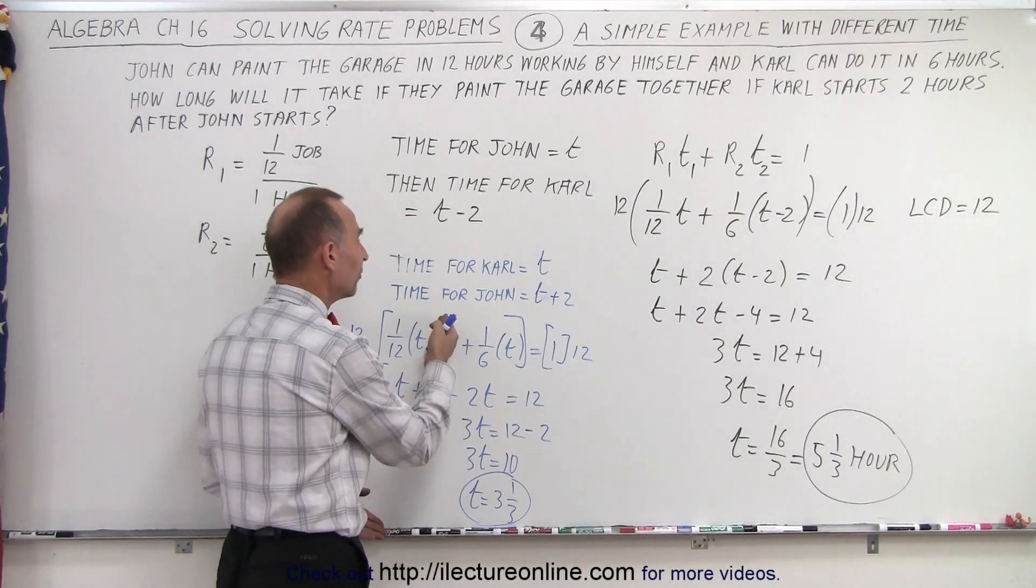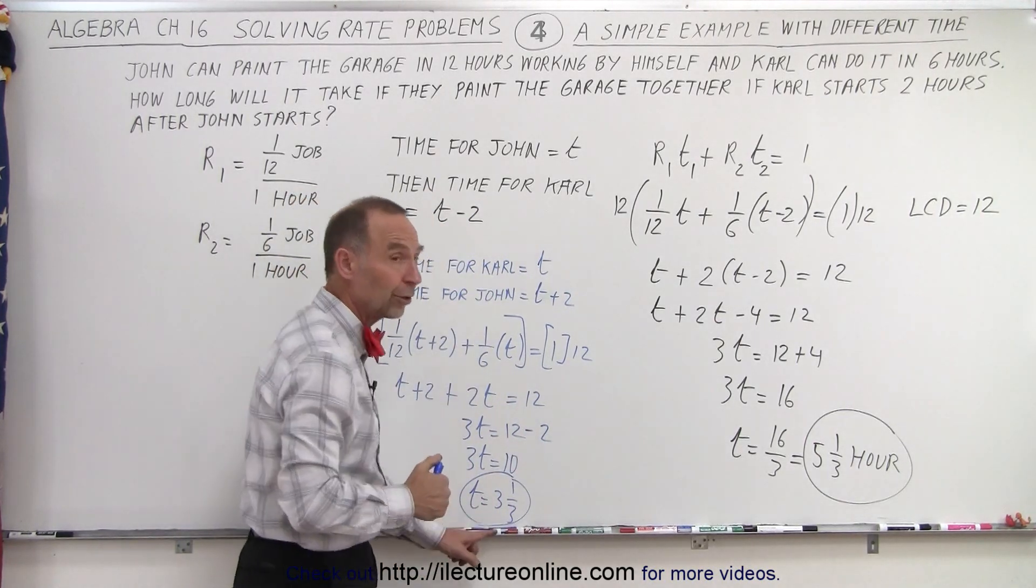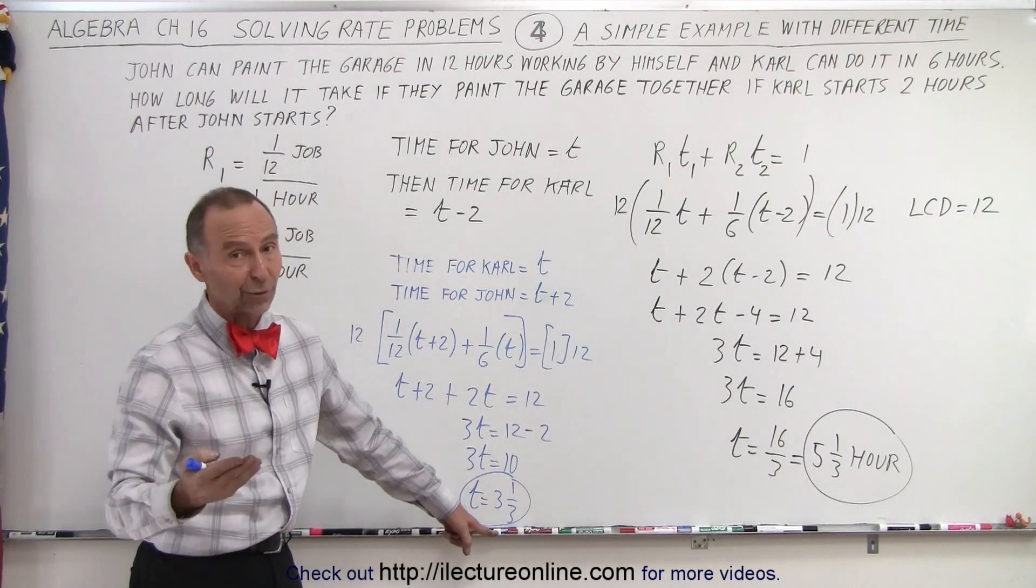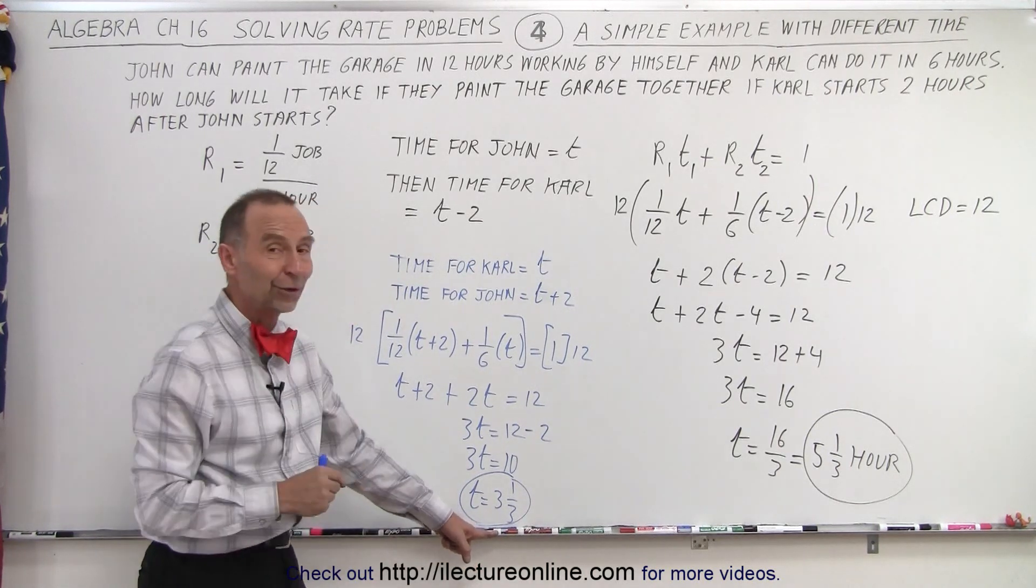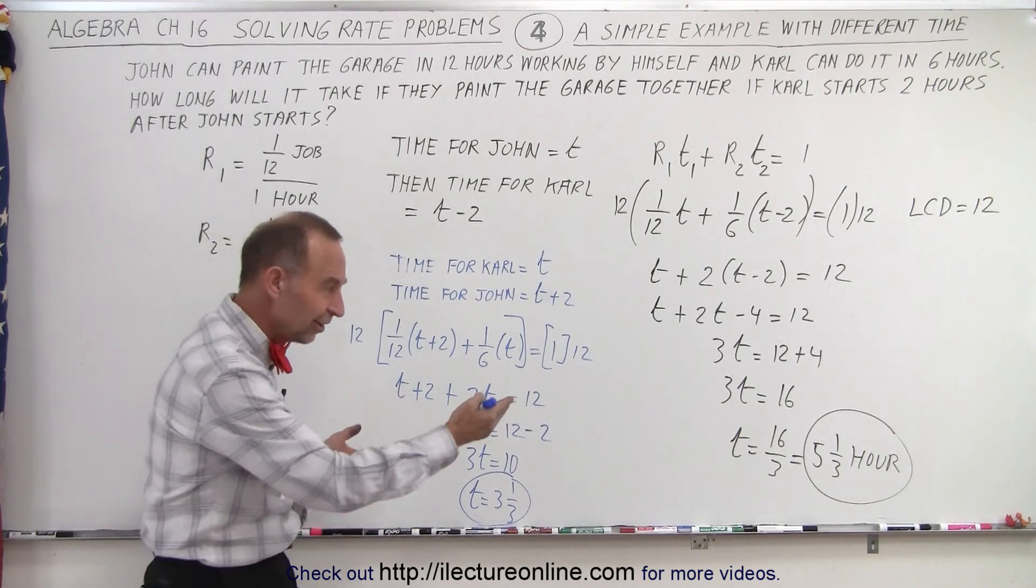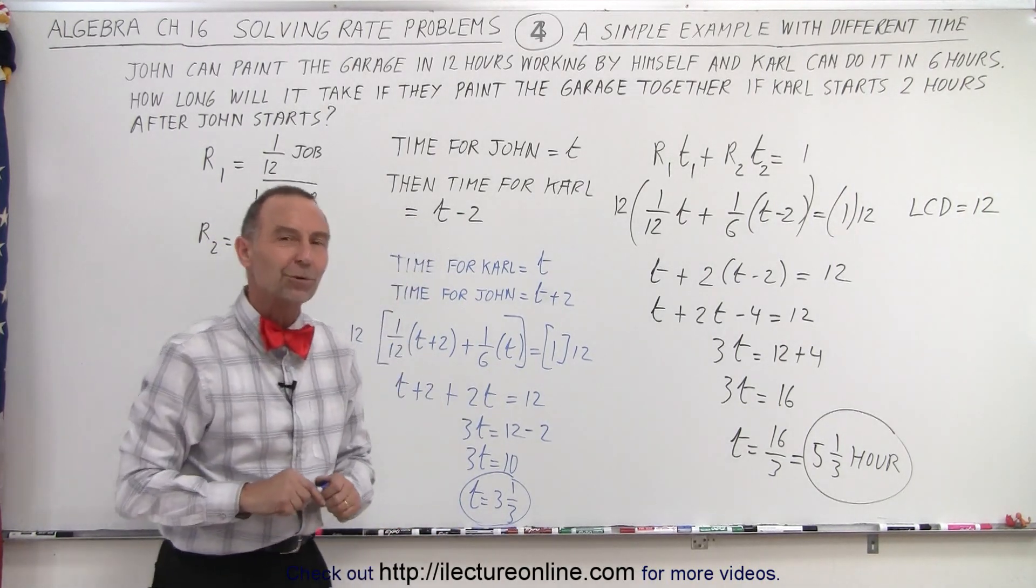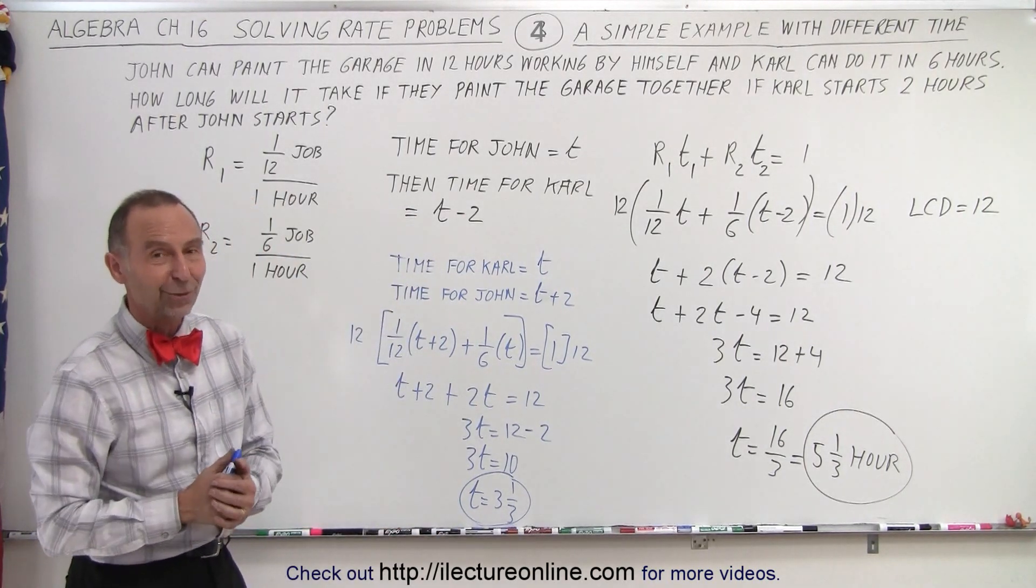Here, t represented the time for Carl, which is 3 and 1/3 hours, and John will work two hours more, which would be 5 and 1/3 hours. So in essence you got the same result, just a slightly different approach. That is how it's done as well.